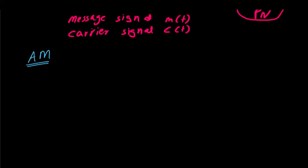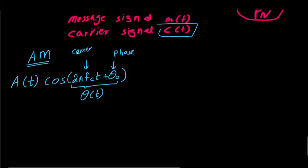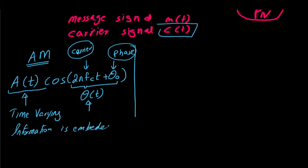Amplitude modulation is simply an amplitude which is a function of time multiplied by a cosine function. We have a carrier which is cos(2π fc·t + θ₀), where θ₀ is a generic angle we call theta of t. In amplitude modulation, the carrier frequency and phase are constant, while the amplitude is time varying. So the information is embedded in the amplitude of the modulated signal.